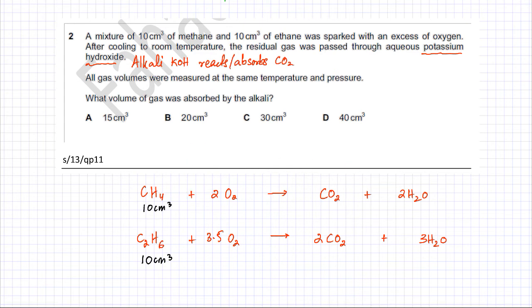One mole of methane gas produces one mole of CO₂ gas, so if you have 10 cm³ of methane, 10 cm³ of CO₂ gas would be produced. Similarly, one ethane produces two CO₂s, so 10 cm³ of ethane would produce 20 cm³ of CO₂ gas.